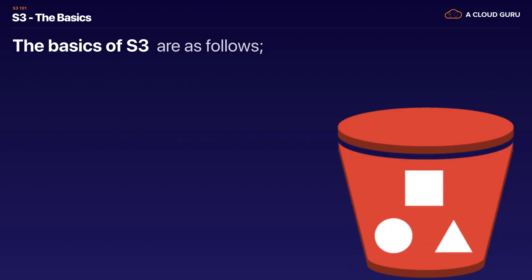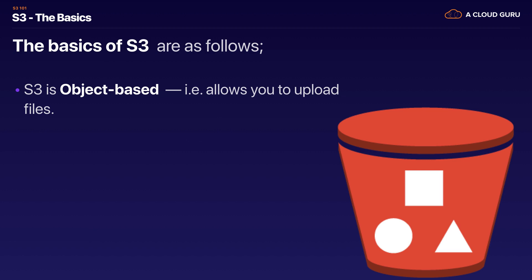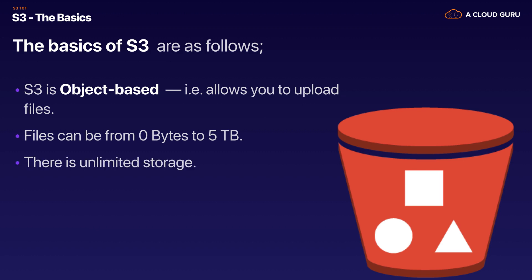The basics of S3 are as follows. It's object-based and allows you to upload files. Your files can be anywhere from zero bytes all the way up to five terabytes. There is unlimited storage and files are stored in things called buckets. A bucket is basically just a folder — a folder in which to put your files.